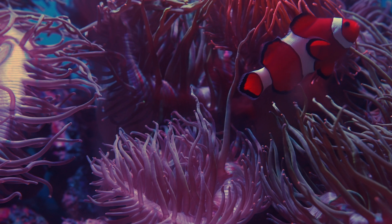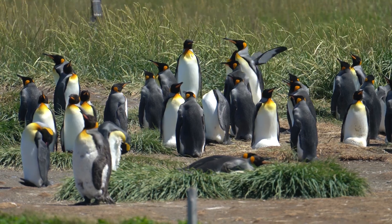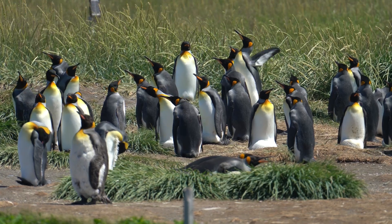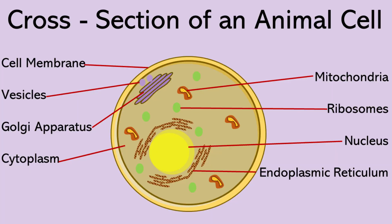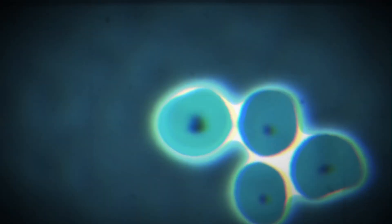Cells are the basic building blocks of all living organisms, performing essential functions to sustain life. They regulate internal processes, convert nutrients into energy, and eliminate waste. Cells contain specialized structures which coordinate activities like growth, reproduction, and metabolism. In multicellular organisms, cells work together to form tissues and organs, enabling complex biological functions. Their ability to replicate and respond to the environment is crucial for the survival and adaptation of living beings.